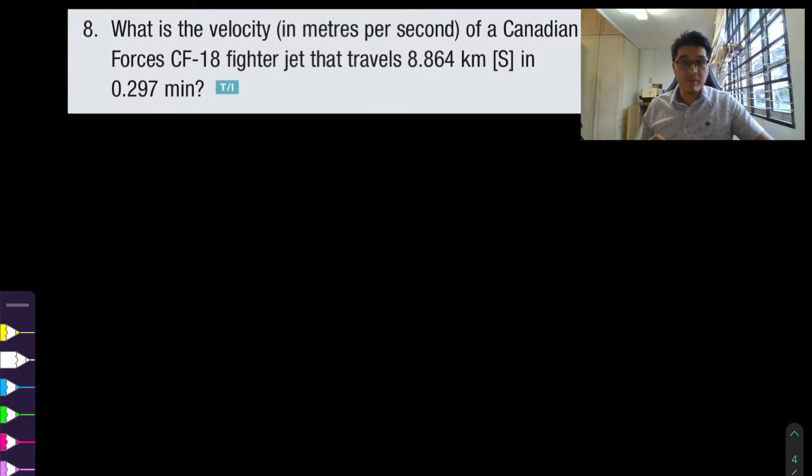All right so now we're on question number eight we're almost finished for today. Question number eight is asking us what is the velocity in meters per second, so see this time they tell us meters per second, of a Canadian Forces CF-18 fighter jet that travels 8.864 kilometers south and 0.297 minutes.